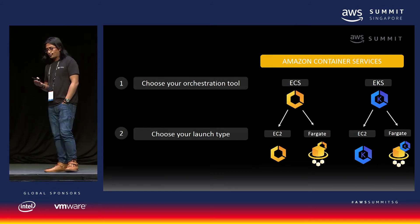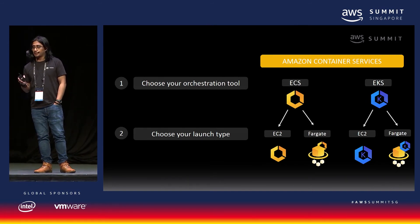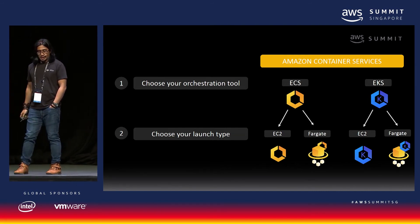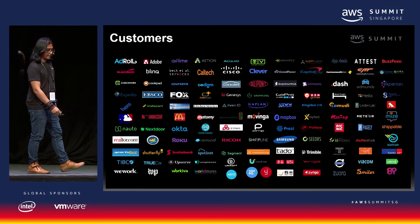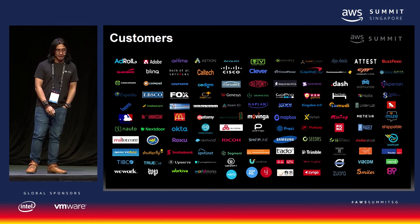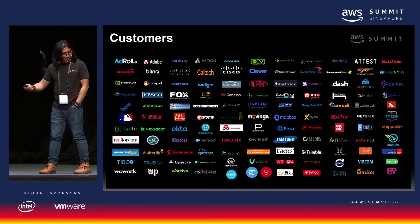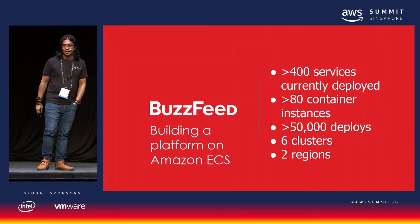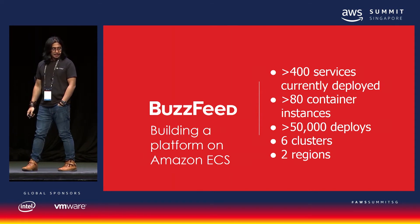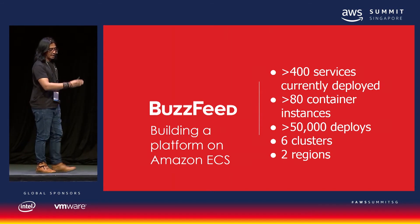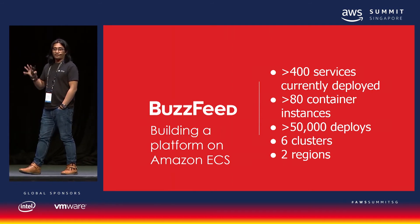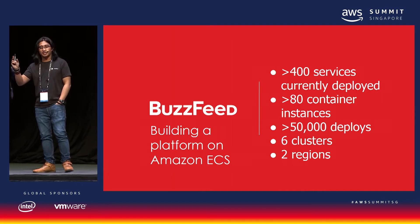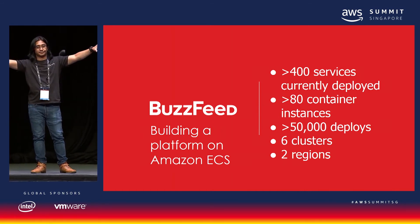If you don't need granular control over your EC2 instances, you can use Fargate. We have many customers who have adopted Amazon ECS — AdRoll, Adobe, Mirab.com, and BuzzFeed. BuzzFeed has been building on Amazon ECS for years. They currently have 400 services deployed, with 50,000 deployments, 80 container instances, and six clusters spanning across two regions.